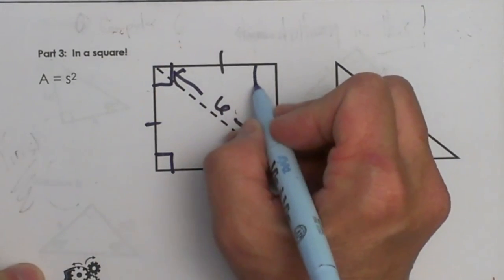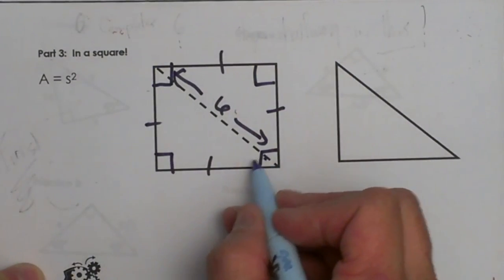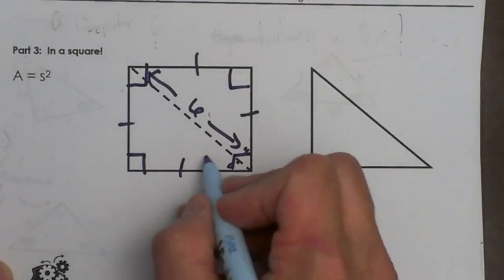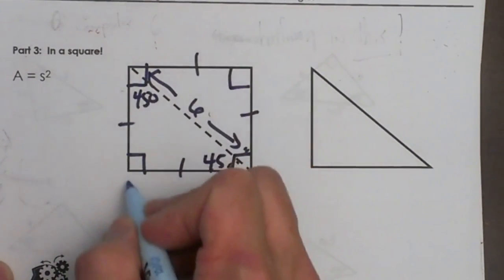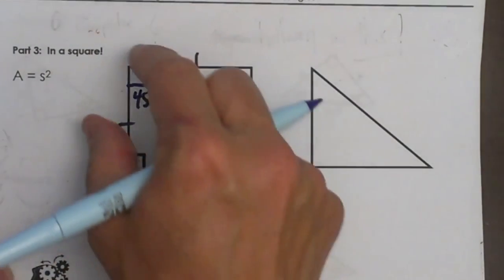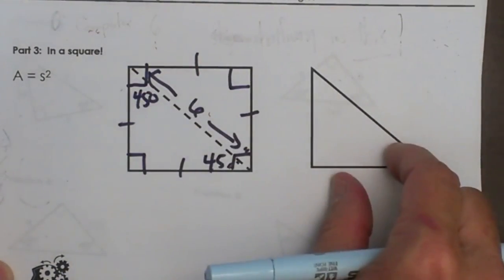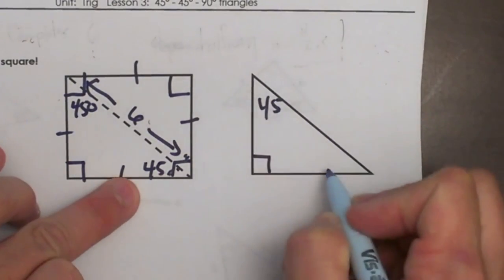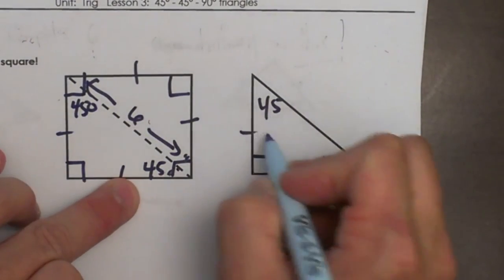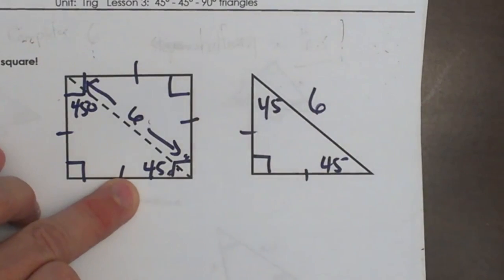When we draw in a diagonal it cuts this 90 degree angle in half and makes it 45 and 45 and 90 over here. So I'm going to pull this triangle out and redraw it over here. So I have 45 and 45 and 90 triangle with a hypotenuse of 6.